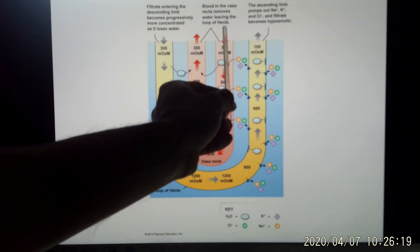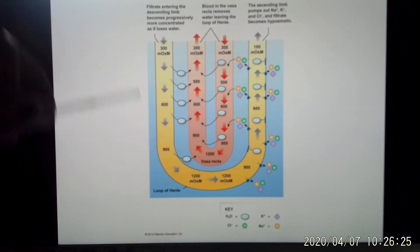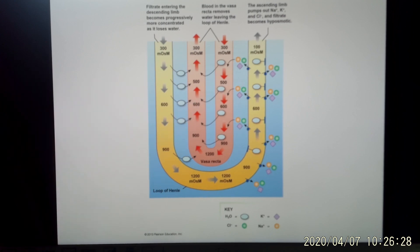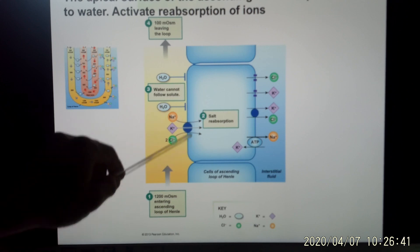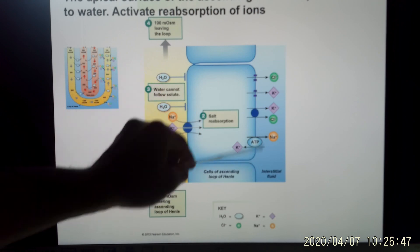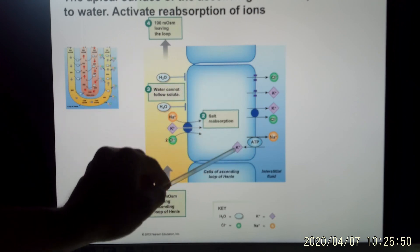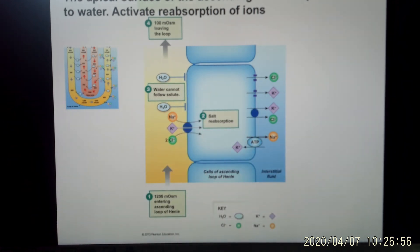The lumen moves counterclockwise and the vasa recta moves clockwise — we call this counter-current exchange, and it happens in the loop of Henle. At the molecular level, the ascending part uses mainly active transport: the sodium-potassium-chloride (NKCC) symporter takes a lot of salt back, and in the basolateral membrane there are ion channels and the sodium-potassium ATPase pump to move ions back. This requires a lot of ATP.